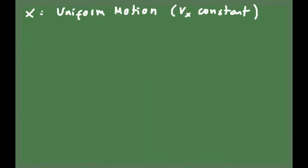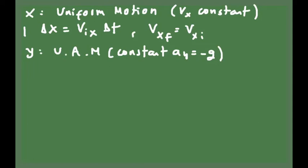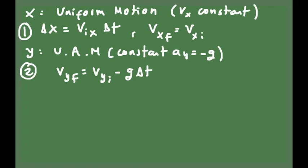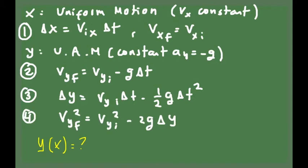Because the acceleration in the x direction is 0, the change in position is given by the x-velocity times delta t. For the y component, we have uniformly accelerated motion since the object moves with constant acceleration equal to minus g. One equation gives the y component of velocity as a function of time; another gives the vertical position as a function of time; and a third relates the final y-velocity to the initial y-velocity and vertical displacement.